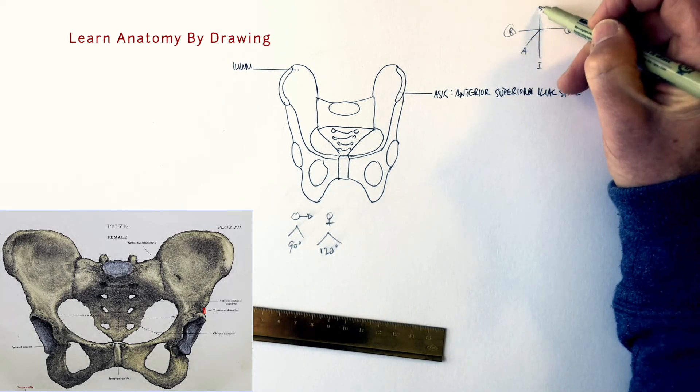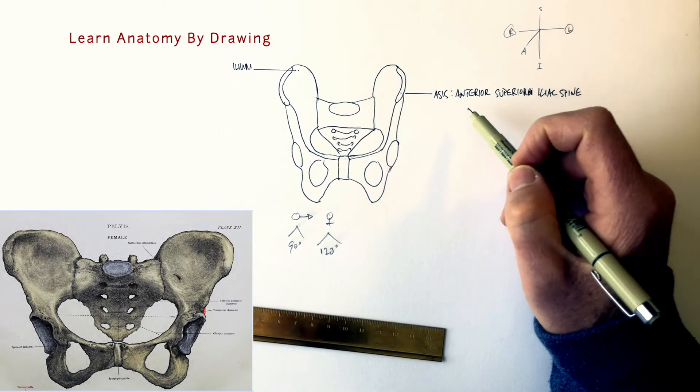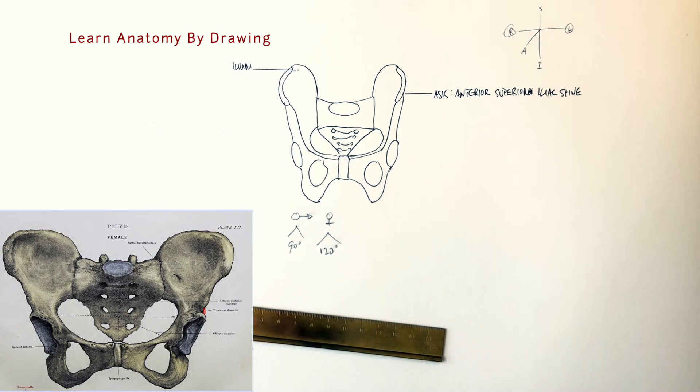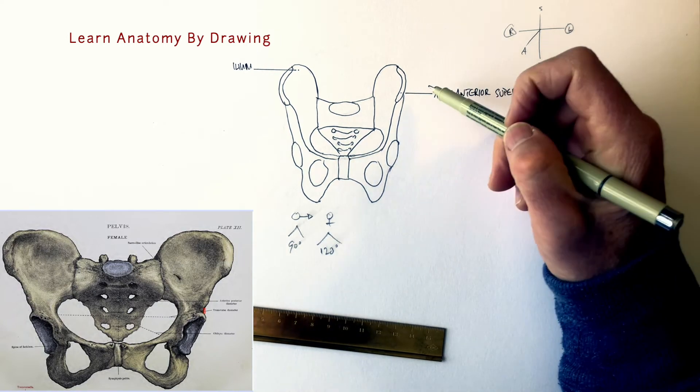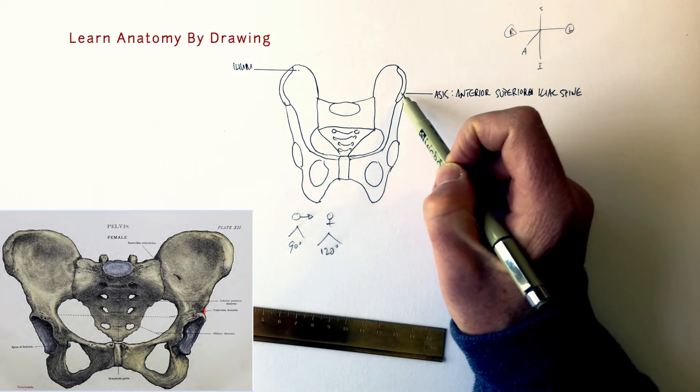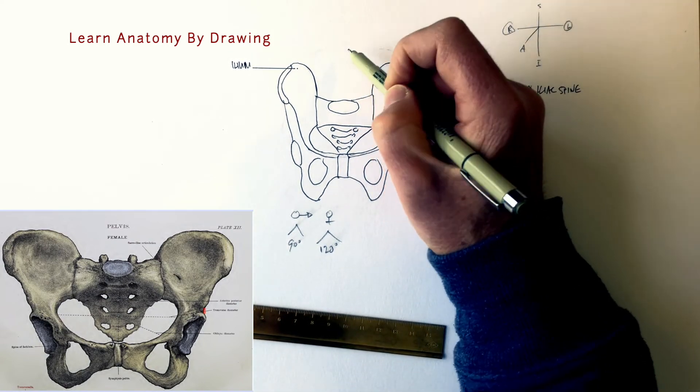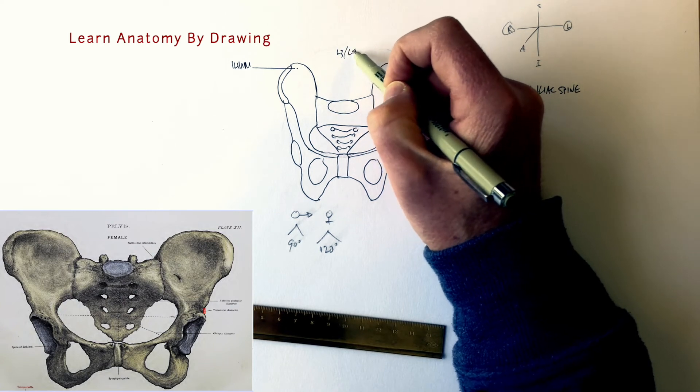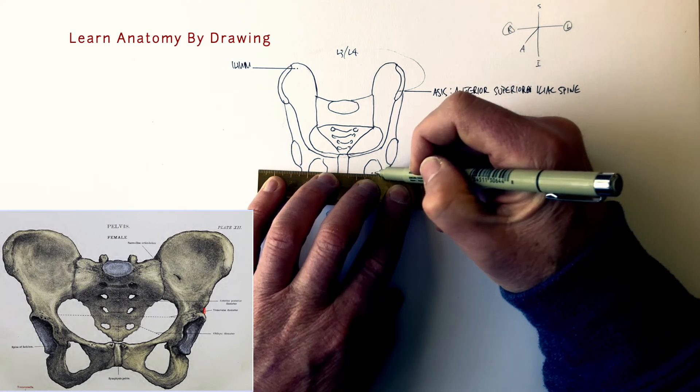You can feel this on your body. If you reach down to your belt level there's that ASIS there that you can feel right on the front lateral side of your abdomen. I use it when I'm examining a patient's spine, it's an important landmark because if you wrap your fingers around it's about L3-L4, so it helps me orient where I am.